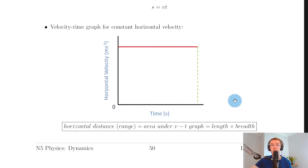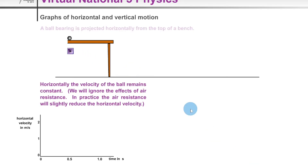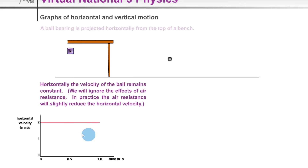Here's a quick simulation to help visualize this. We have a ball being projected horizontally from the top of a bench. When we play it, the ball travels with a curved trajectory — projectile motion. Looking at the graph of horizontal velocity in metres per second against time in seconds, we expect a straight horizontal line. Playing it, we get exactly that: a straight horizontal line at two metres per second.